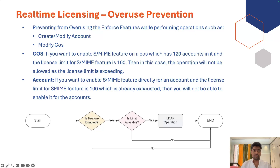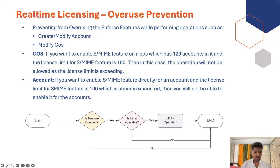Prevention is another component for real-time licensing. It prevents you from using a feature beyond its limit — for example, if you are allowed 100 users for S/MIME, it will not allow you to exceed 100. It is applied at both COS and account level. If you are trying to enable a feature at the COS level, it will check in the background whether there is available limit based on the number of accounts that will be affected. Similarly for account level — if the limit is exhausted, it will not allow you to enable the feature.